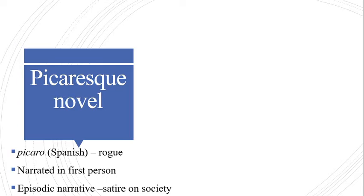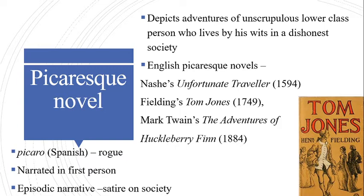Another type of novel is the picaresque novel. The term 'picaresque' is derived from the Spanish term 'picaro,' which means rogue or rascal. In English, the term means a scoundrel of low birth and evil life at war with society. This kind of novel is a genre of prose fiction that depicts the adventures of an unscrupulous person — a kind of anti-hero who lives by his wits in a dishonest society. The picaresque novel originated in Spain and attempted to establish realism as the dominant trend. Cervantes also incorporated elements of the picaresque.